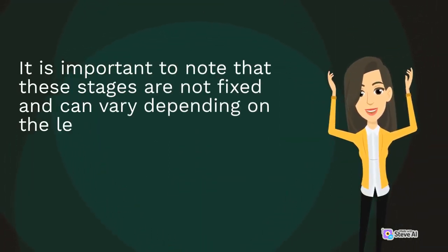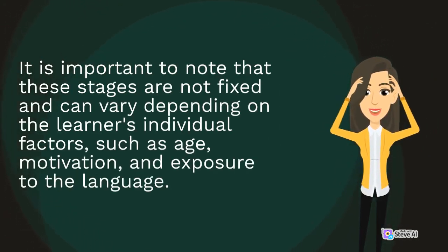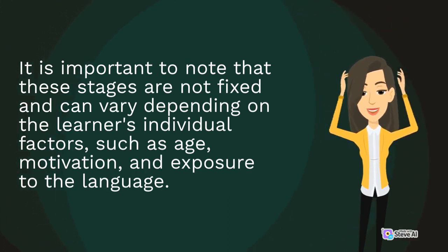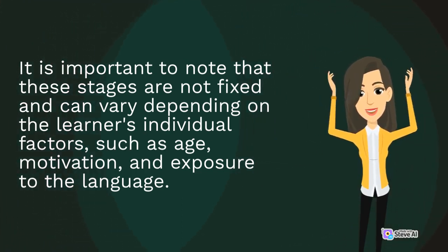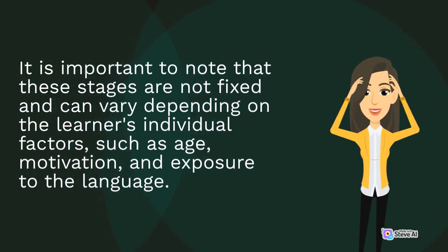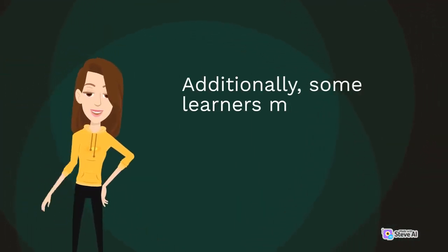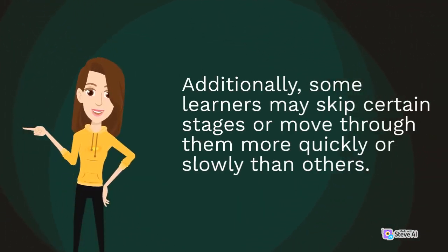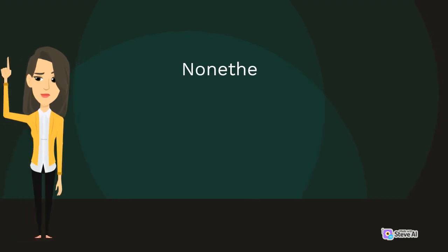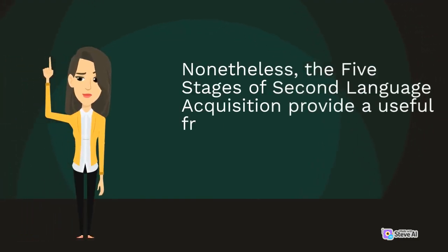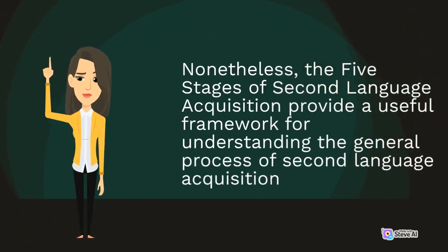It is important to note that these stages are not fixed and can vary depending on the learners' individual factors, such as age, motivation, and exposure to the language. Additionally, some learners may skip certain stages or move through them more quickly or slowly than others. However, the five stages of second language acquisition provide a useful framework for understanding the general process of second language acquisition.